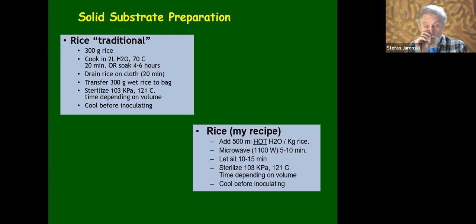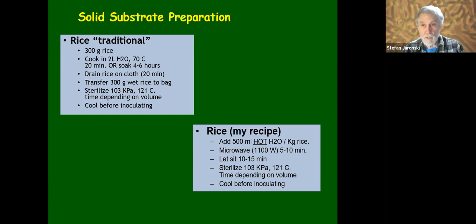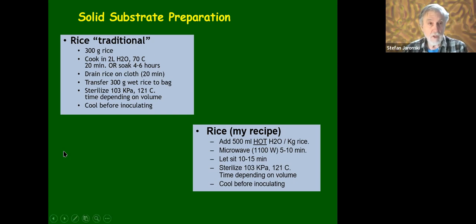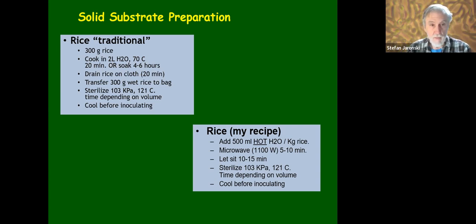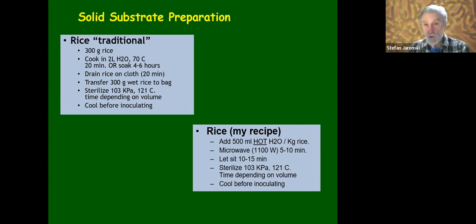Substrate preparation: these are just recipes, and in the videos I'm hoping to prepare in the next few months we will demonstrate some of this. For rice, let's say 300 grams: typically it's cooked in water at 70°C for 20 minutes, or simply soaked for four to six hours. Then it's pulled out, drained on a cloth for 20 minutes, and transferred to plastic bags. Then it's sterilized and cooled before inoculating.